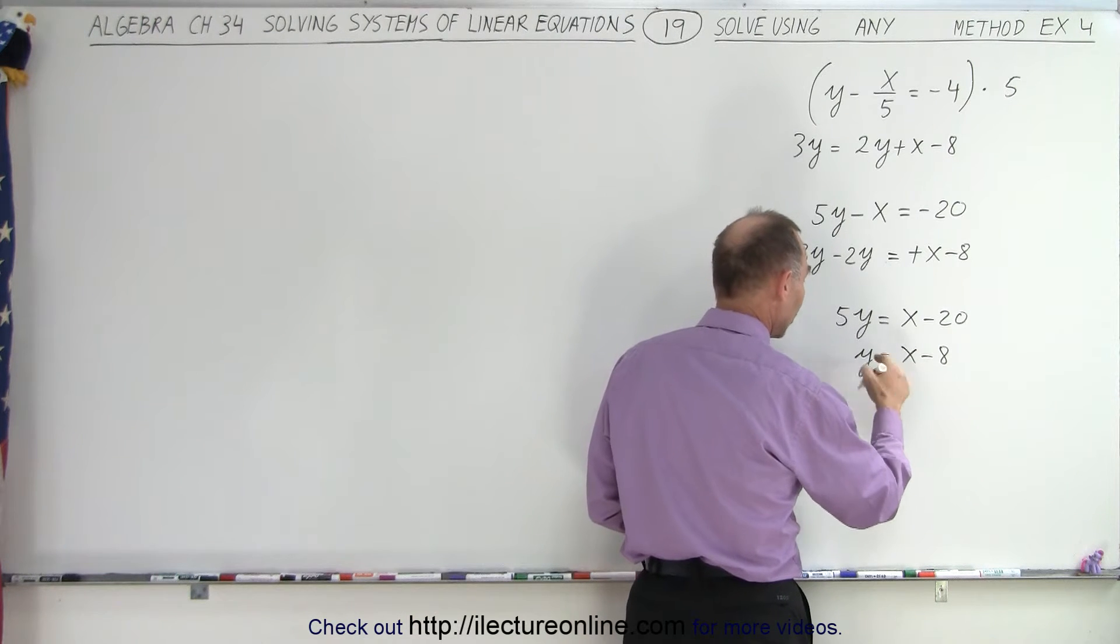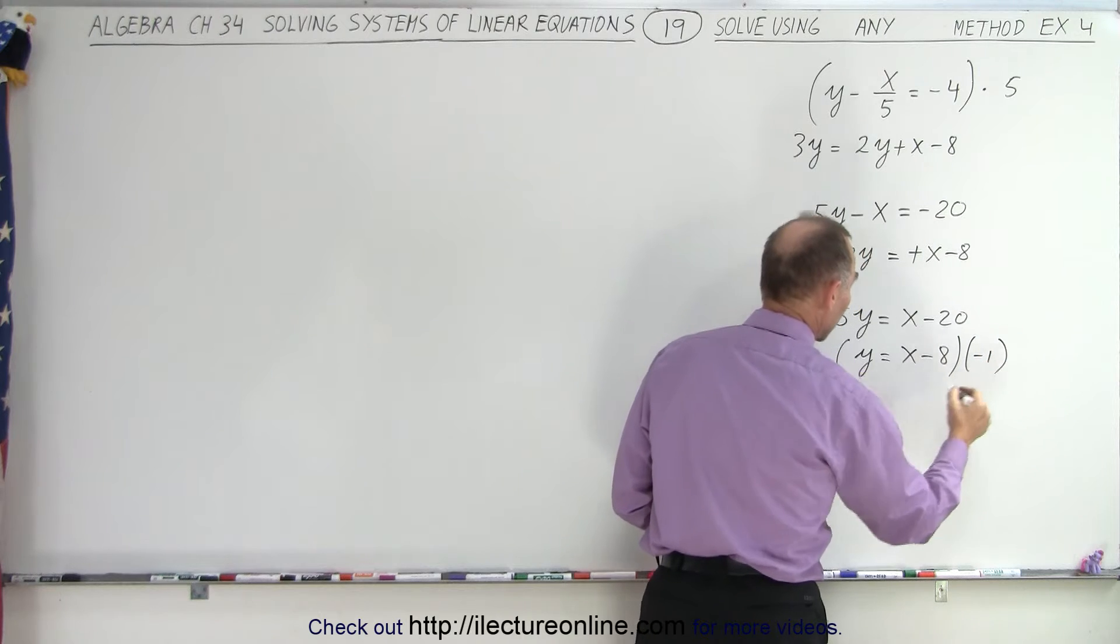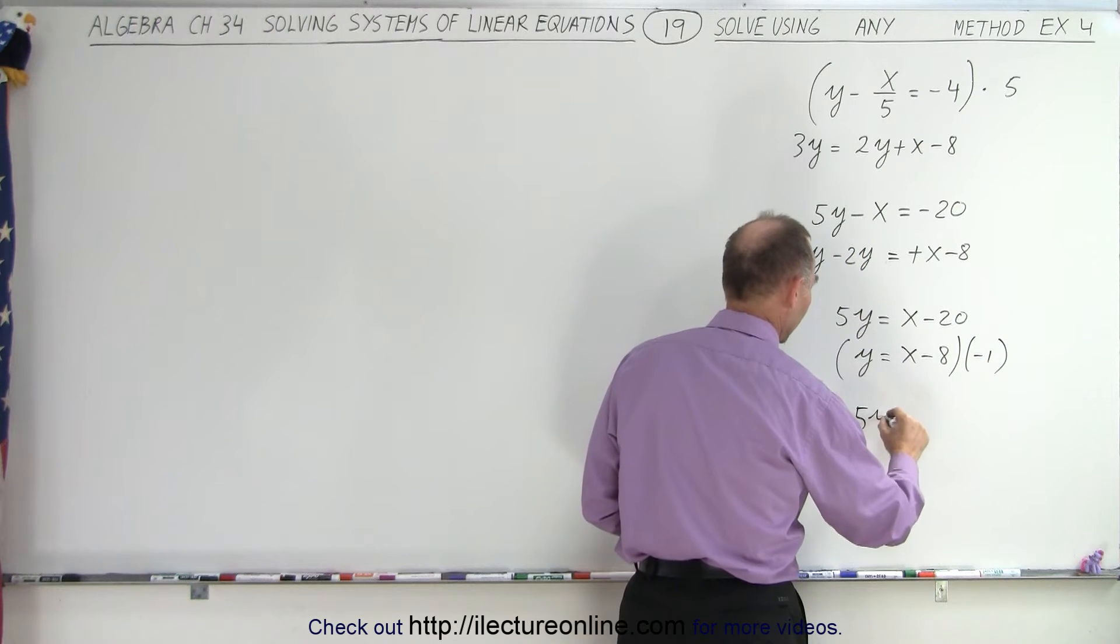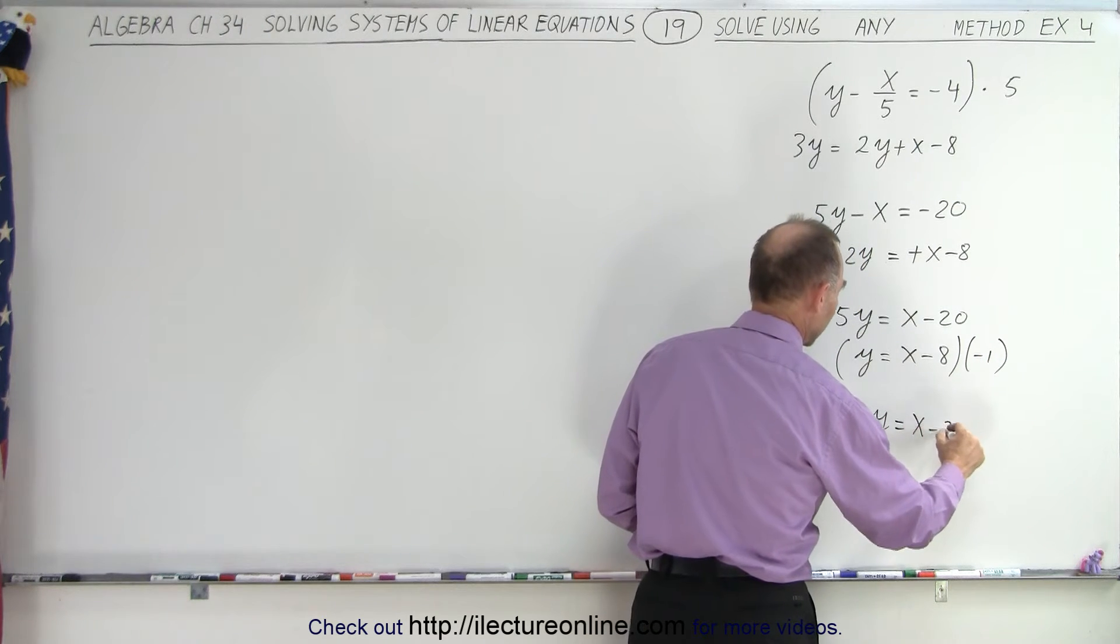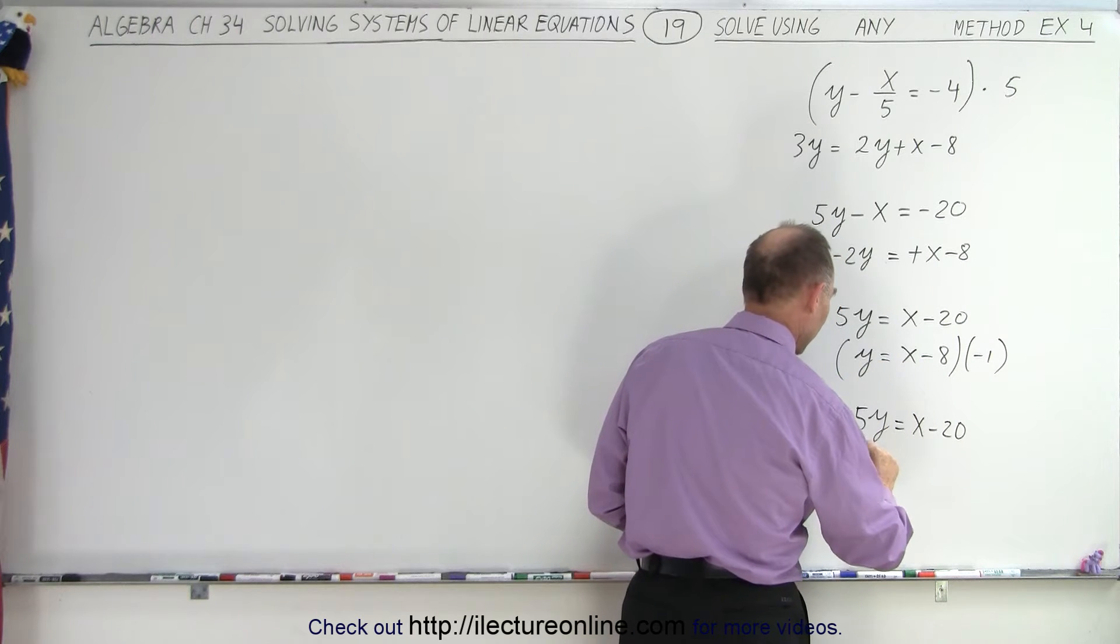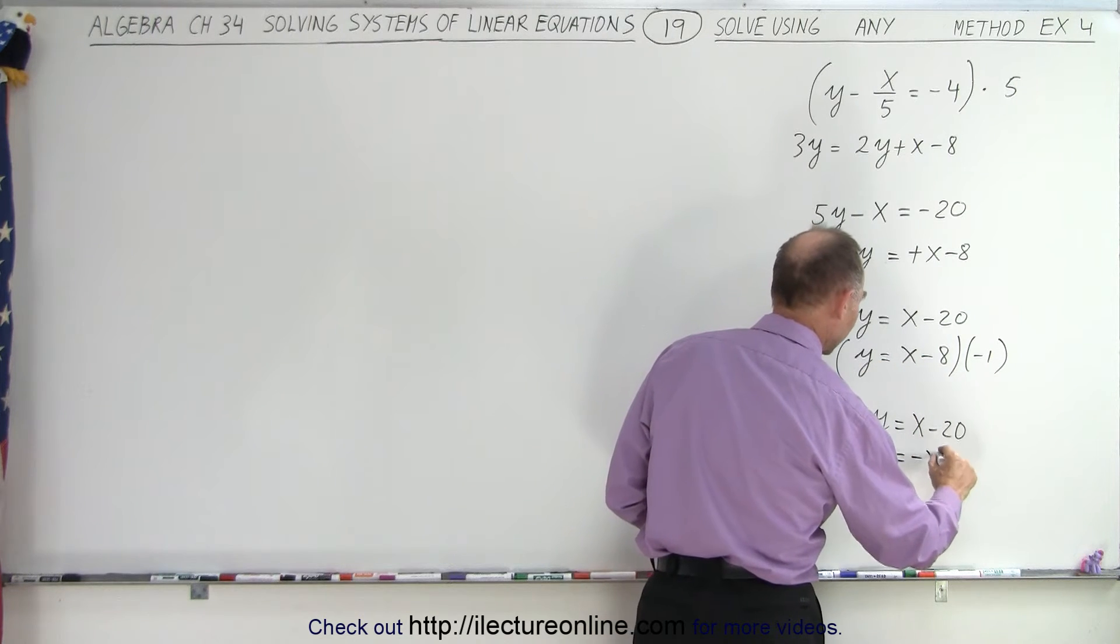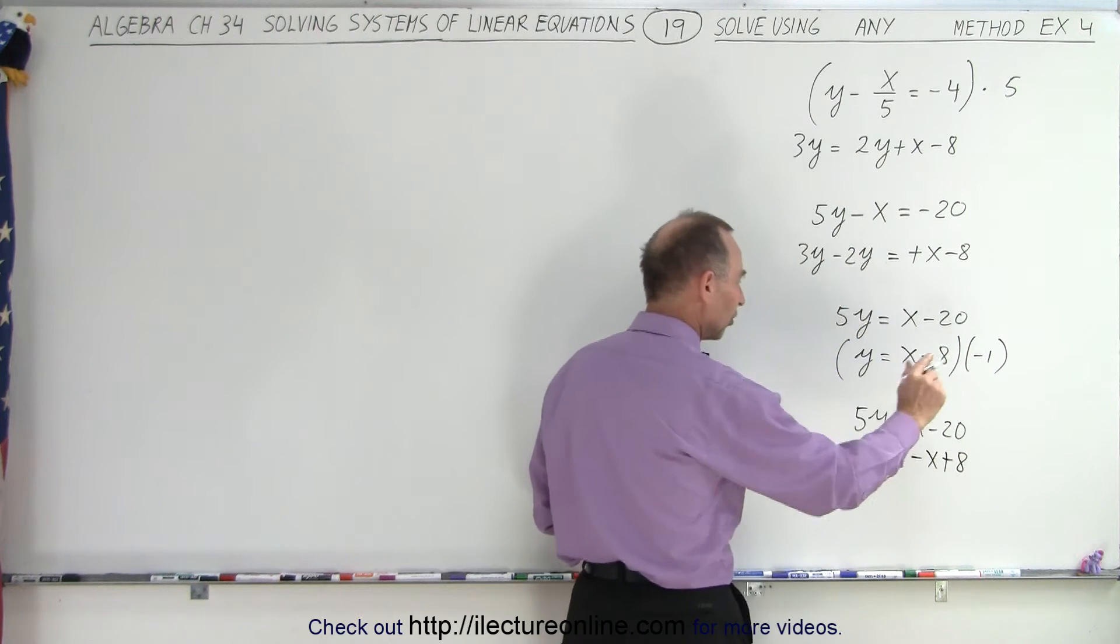So the top equation becomes 5y equals x minus 20, and the bottom equation becomes minus y equals minus x plus 8. I simply change all the signs.